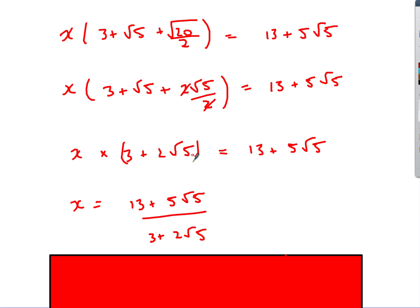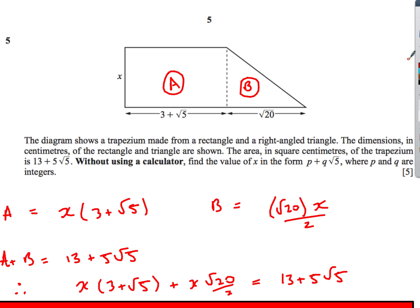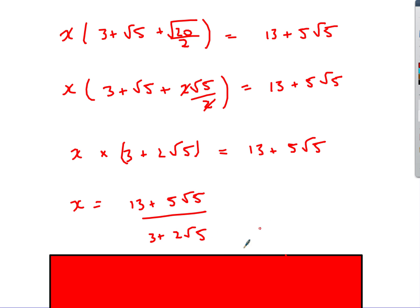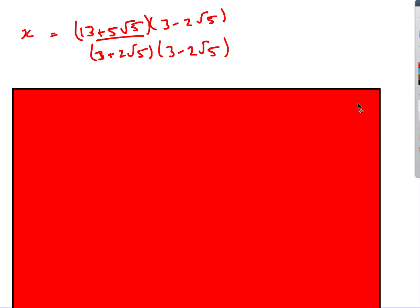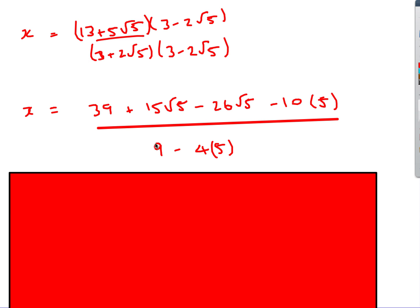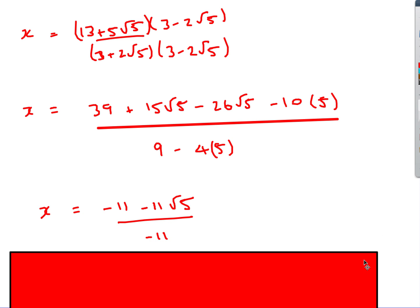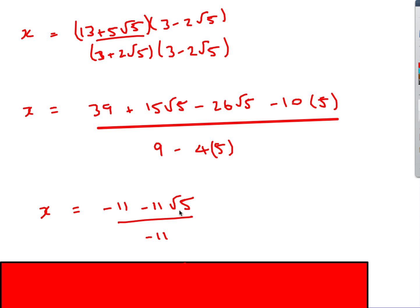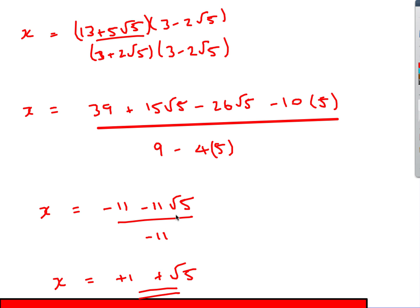So x = (13 + 5√5)/(3 + 2√5). Now rationalize the denominator — multiply top and bottom by the conjugate (3 − 2√5). The denominator becomes 9 − 4·5 = 9 − 20 = −11. Expanding the numerator and collecting terms gives −11 − 11√5 all over −11. Dividing by −11: x = 1 + √5.